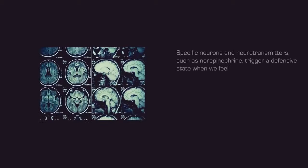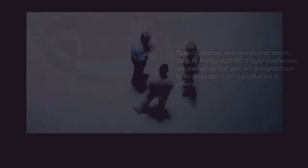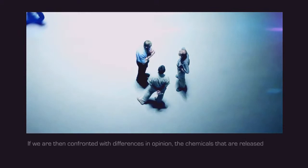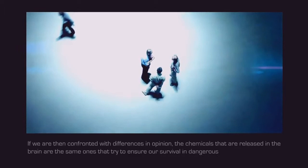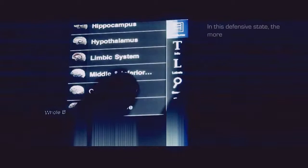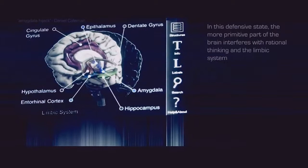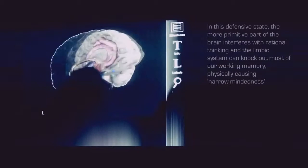Specific neurons and neurotransmitters, such as norepinephrine, trigger a defensive state when we feel that our thoughts have to be protected from the influence of others. If we are then confronted with differences in opinion, the chemicals that are released in the brain are the same ones that try to ensure our survival in dangerous situations. In this defensive state, the more primitive part of the brain interferes with rational thinking, and the limbic system can knock out most of our working memory, physically causing narrow-mindedness.